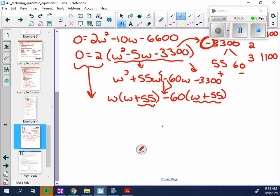If I did this correct, because my brackets are the same, so I have my factor of w plus 55. I have my other factor from my greatest common factors, w minus 60, and I also have this 0 equals 2 at the beginning.